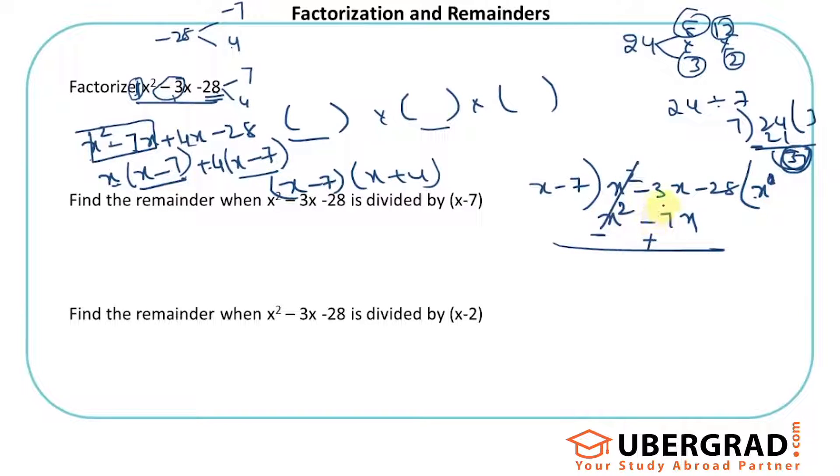4x - 28. Then I'll do +4. So 4 × x = 4x, -4 × (-7) = +28. This gets cancelled out, so the remainder is 0.